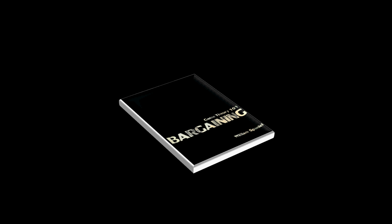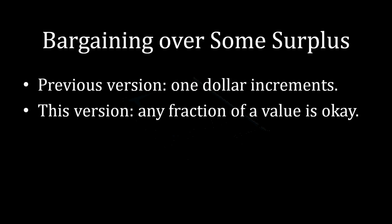So what are we doing here that's different from what we've done before? We're still bargaining over some surplus between two parties. In the previous version though, we had fixed $1 increments. So when Albert and Barbara were bargaining over that vehicle where there was $500 of surplus, Albert could only offer Barbara divisions that ended in whole dollar amounts.